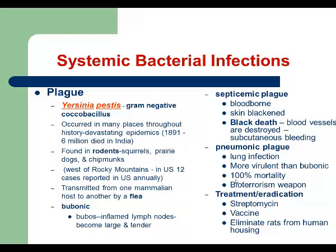For the treatment of this infection, we are going to use antibacterials. For example, streptomycin can be a drug of choice. A vaccine is also available today. We usually offer this vaccine to high-risk individuals, for example biologists and archaeologists — people who are working in desert areas.